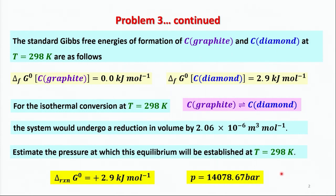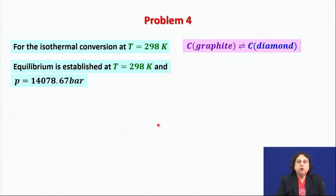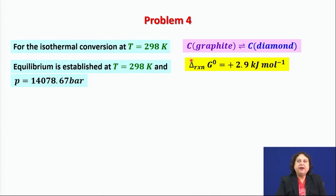Yield is in general given in terms of the equilibrium constant. The question is how do we find the yield of this reaction at 298 Kelvin and one bar pressure. To do that, we will have to use the available thermodynamic information, as follows.